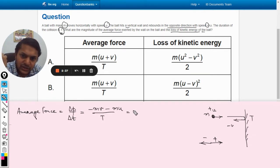Divided by the total time, which is T. So we can say minus m times (v plus u) divided by T.